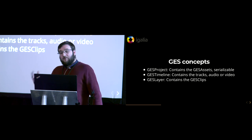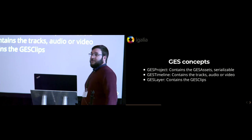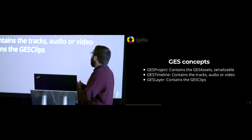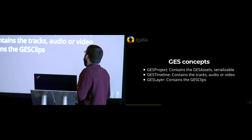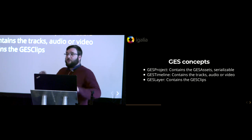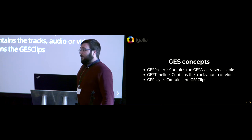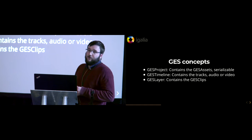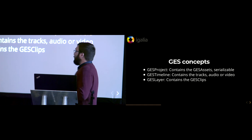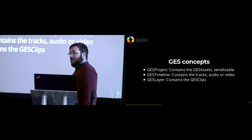We have the concept of timeline, which basically contains several tracks. A track is an output type, so you would have one audio track and one video track. In terms of implementation, a track is basically wrapping an NLE composition. The GES timeline is a GStreamer bin that contains several tracks, which also are GStreamer elements, and those actually wrap the NLE composition.